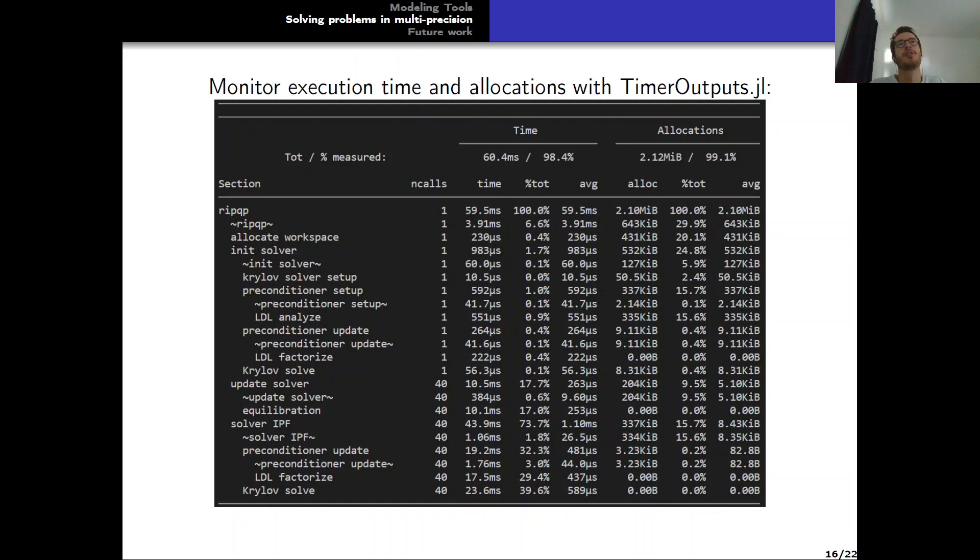Here quickly I have displayed how we can monitor execution time and allocation using TimerOutputs.jl with that same problem. So this is a very small problem. But we can see here that it's possible to monitor the execution time, for example, of the Krylov solve, the time of the preconditioner update, the allocations, etc. This is also explained in the documentation of how to create this table.